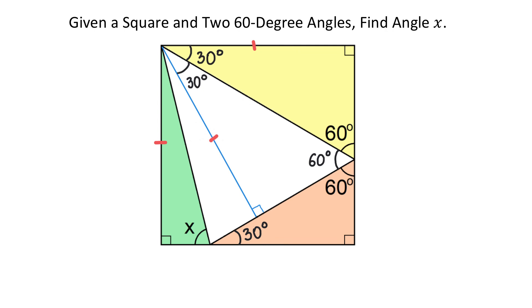90 degrees minus twice 30 is 30, and 30 divided by 2 is 15. And now, in this green right triangle, to find angle X, we need to subtract 15 degrees from 90 degrees. 90 degrees minus 15 degrees is 75 degrees.